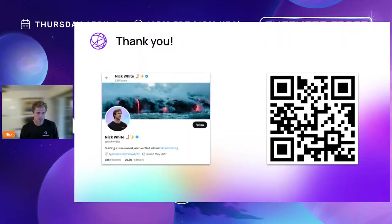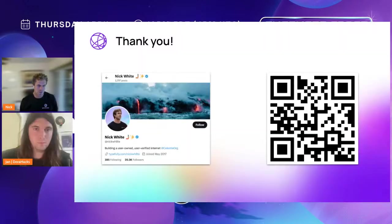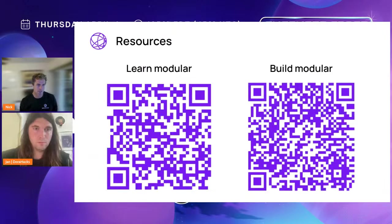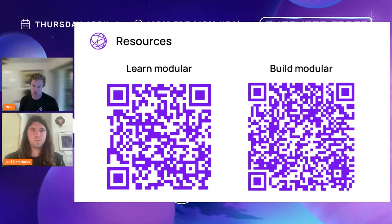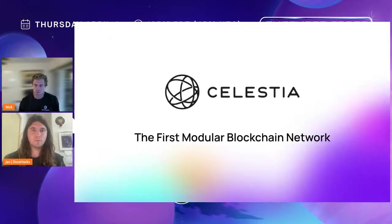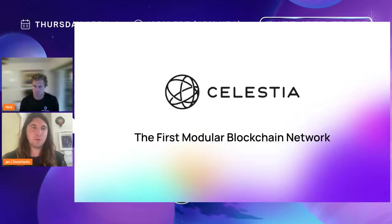Remember the high-level vision: we want to get to a world of a million rollups, and that's going to take both infrastructure as well as developers experimenting with the stack and a feedback loop of learning from each other. Together is how we achieve this end vision. I'm on Twitter, and here are some resources — the Learn Modular page is a great place to learn modular concepts, and Build Modular is the development portal. Thank you very much!